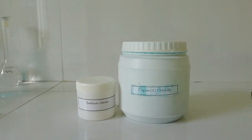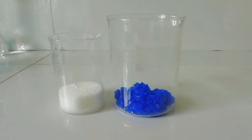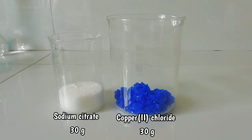To start with the reaction, we need two chemicals. You can see here copper chloride and sodium citrate. I've taken about 30 grams of each chemical: 30 grams of sodium citrate and 30 grams of copper chloride.